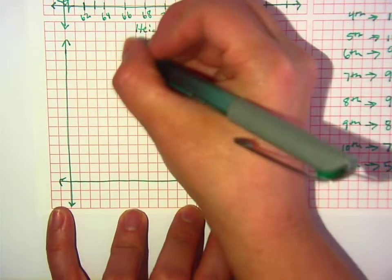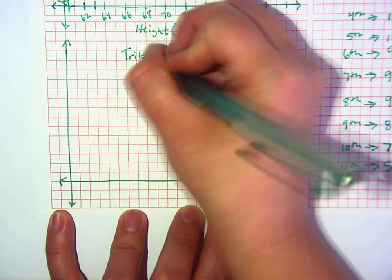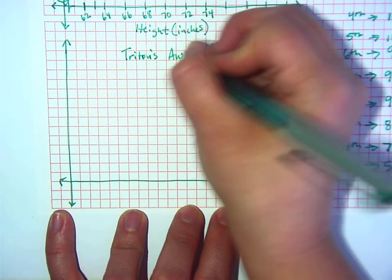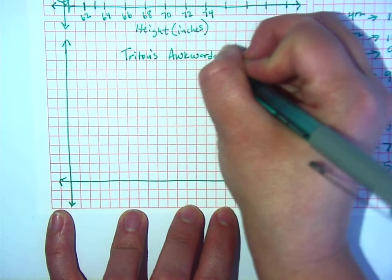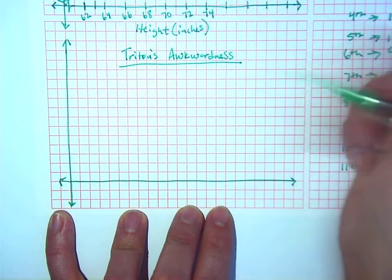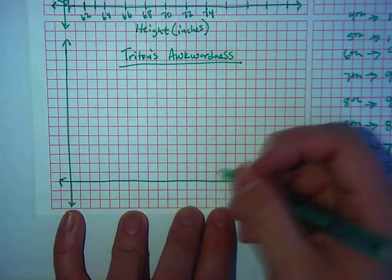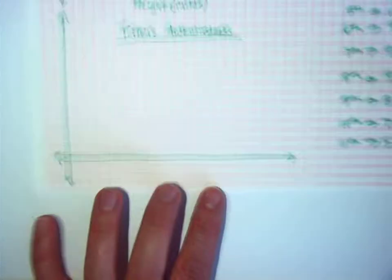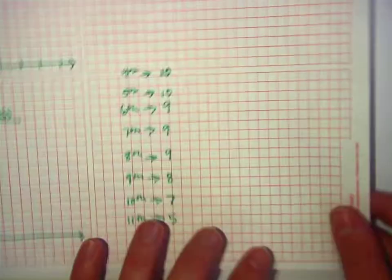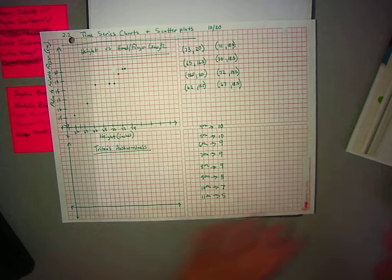So, we're going to title this graph Triton's Awkwardness. And this is called a time series chart. I'm going to put that over here on the side. I'm going to zoom out so everybody can see. I'm going to write over here, scatter.